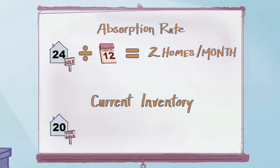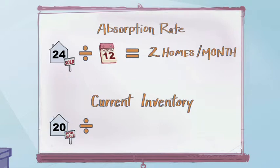In addition, we can calculate the current inventory by dividing the active listings in the area, 20 in this case, by the absorption rate per month, which we just calculated to be two. Therefore, in our example neighborhood, there is a 10-month inventory of homes currently listed for sale.